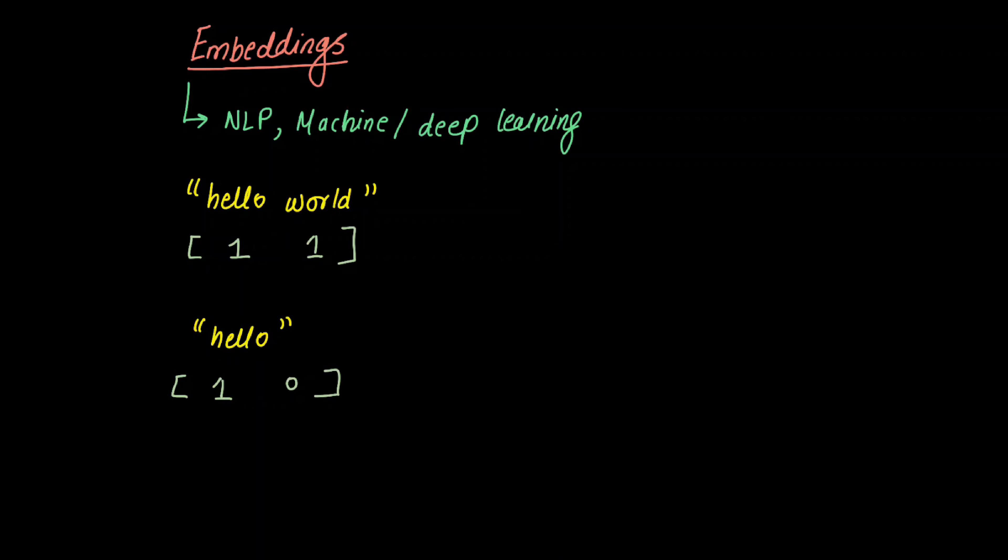Now if I give you another string which just says "hello", how do we represent it into a form of an array? So let's say we can do something like this: since it has "hello" I'll give it a 1, but it doesn't have "world" I give it a 0.